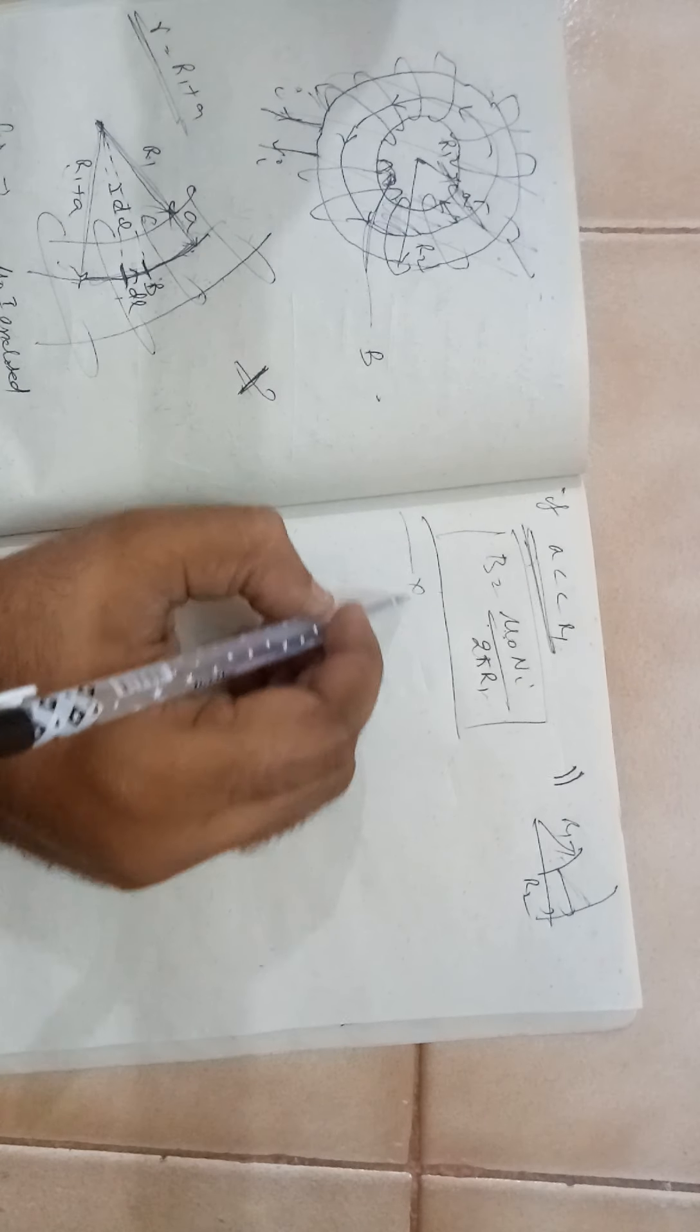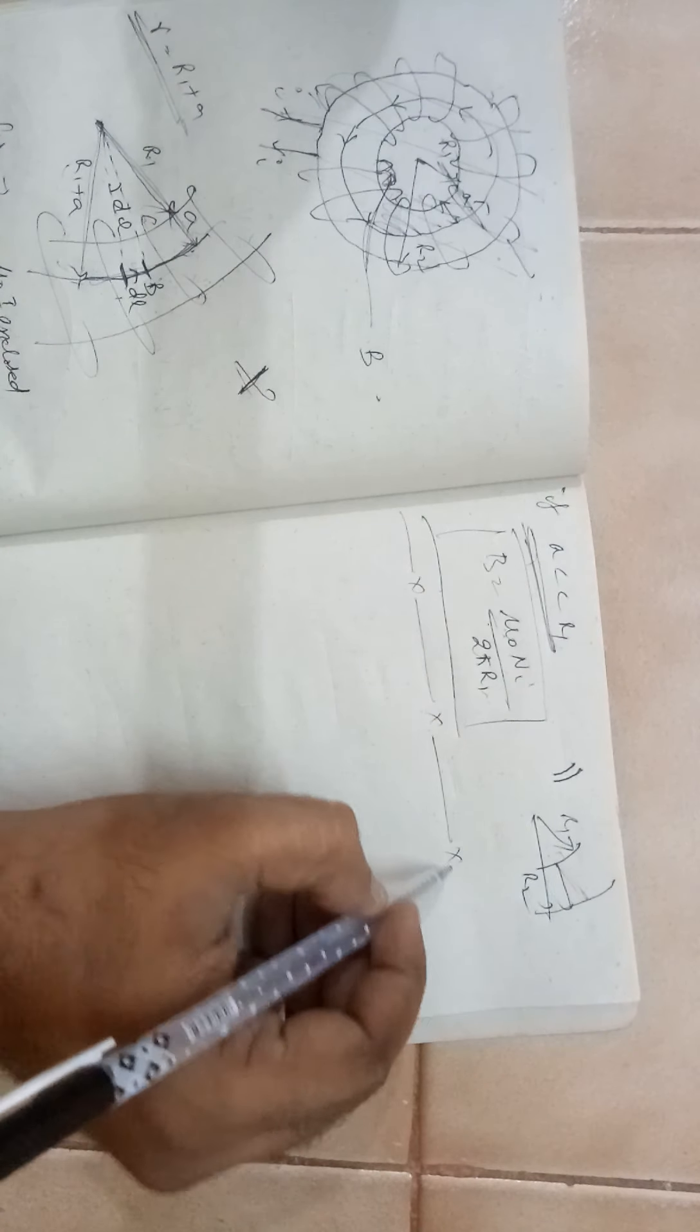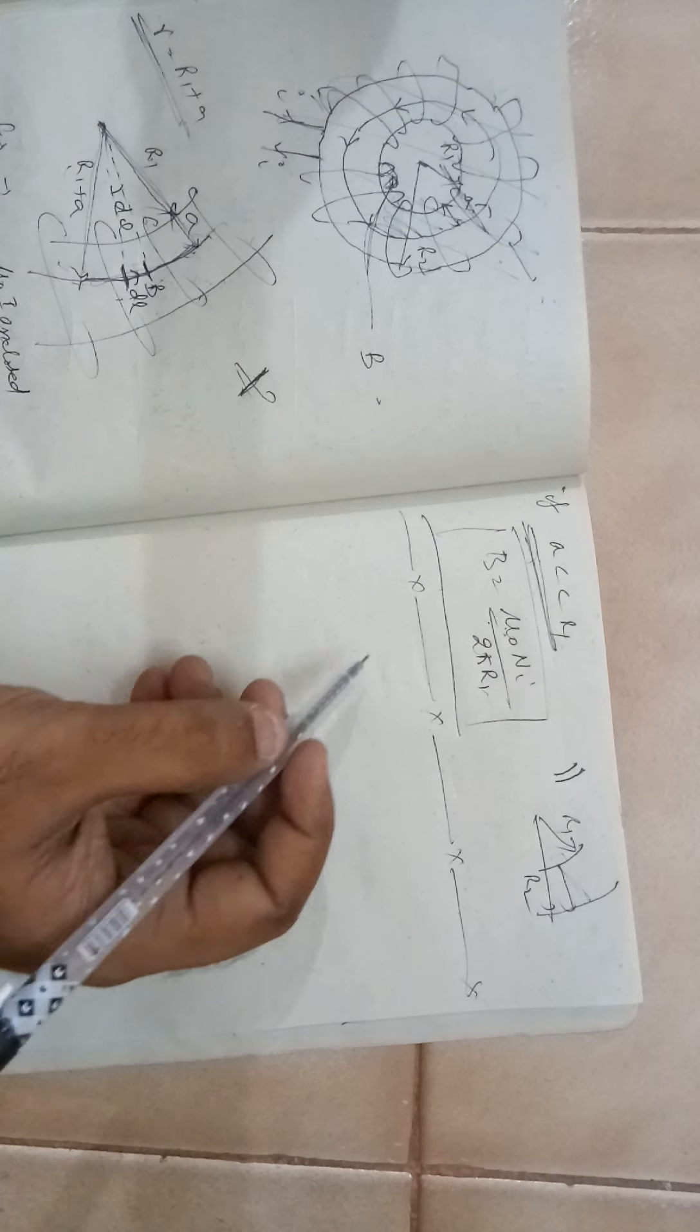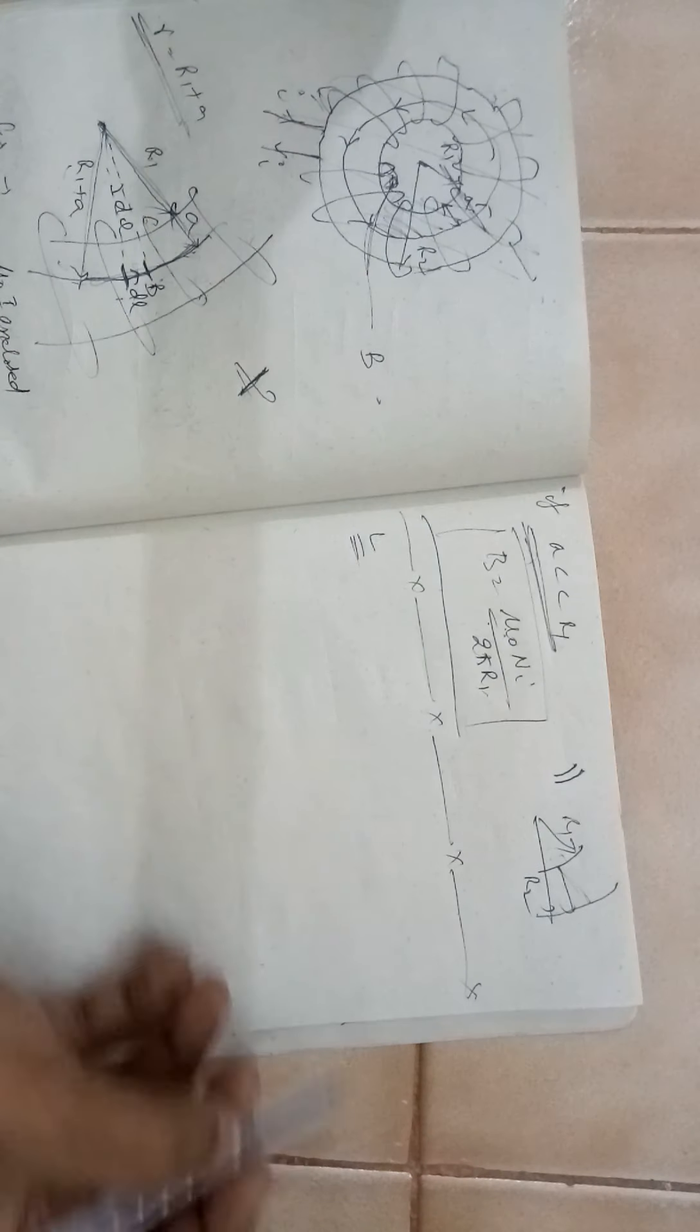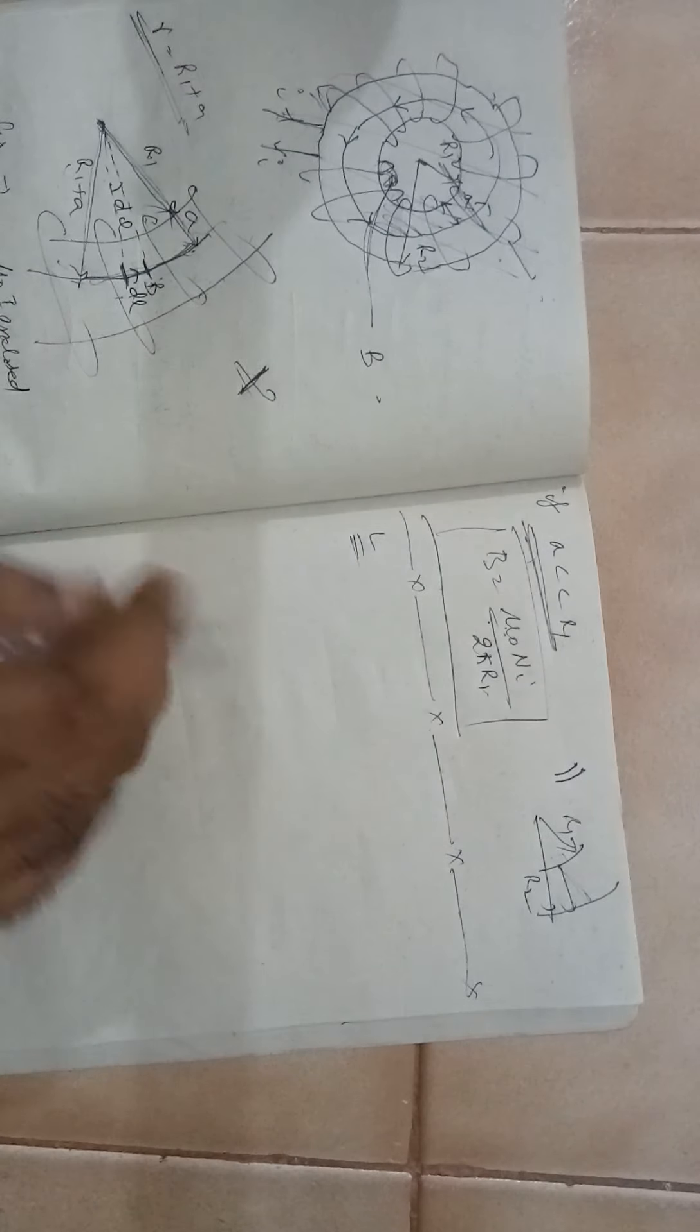Let us find the inductance, self-inductance of a toroid. We want to find the L value of a toroid.